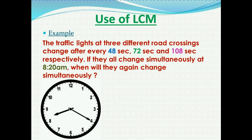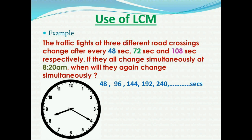At 8:20 a.m., all three traffic signals changed simultaneously. Let's think about each traffic light. The first traffic light changes every 48 seconds, so it will change at the 48th second, then the 96th second, then the 144th second, then the 192nd second, then the 240th second — that means at every multiple of 48 seconds, the first traffic light will change.